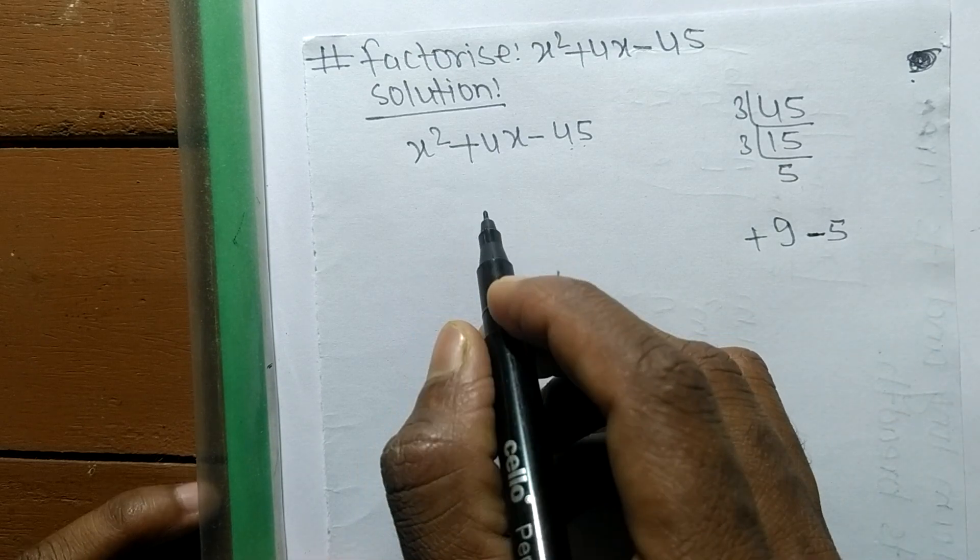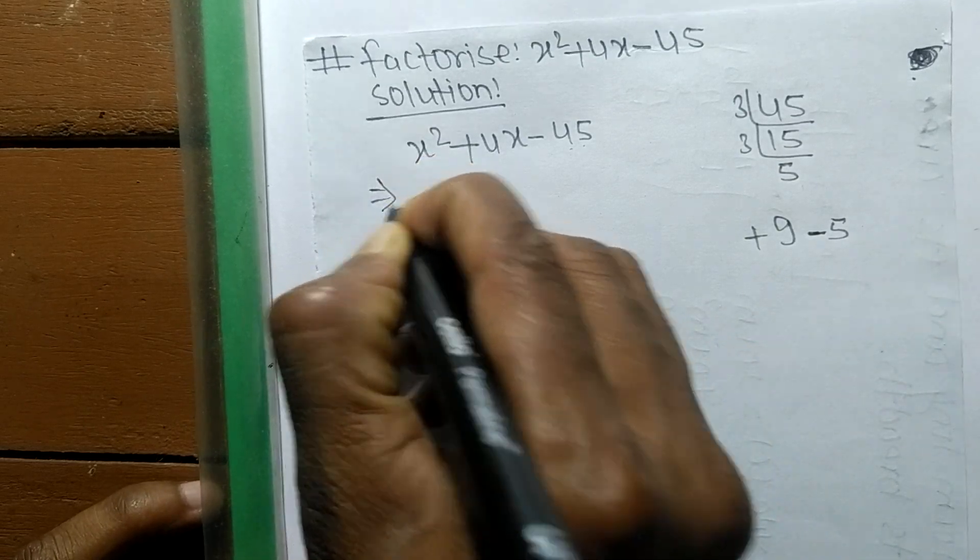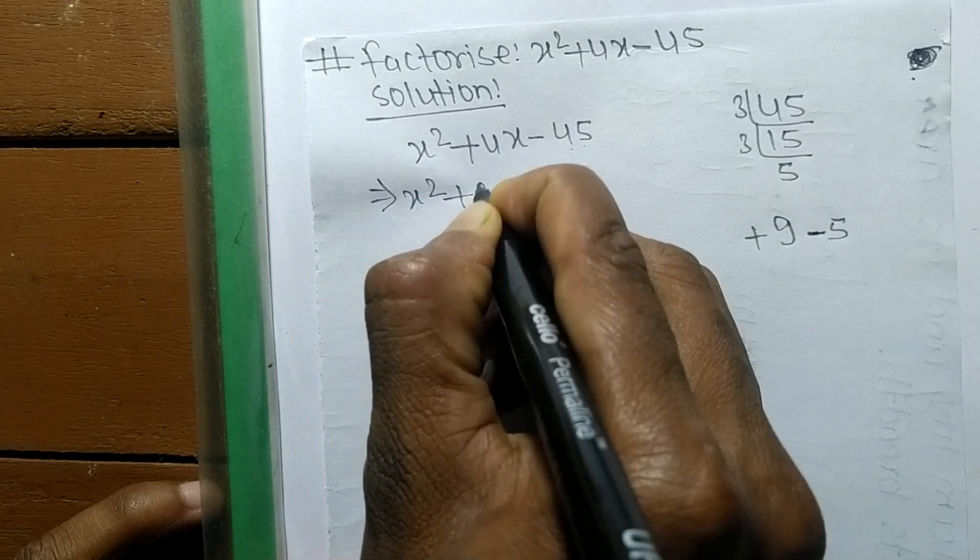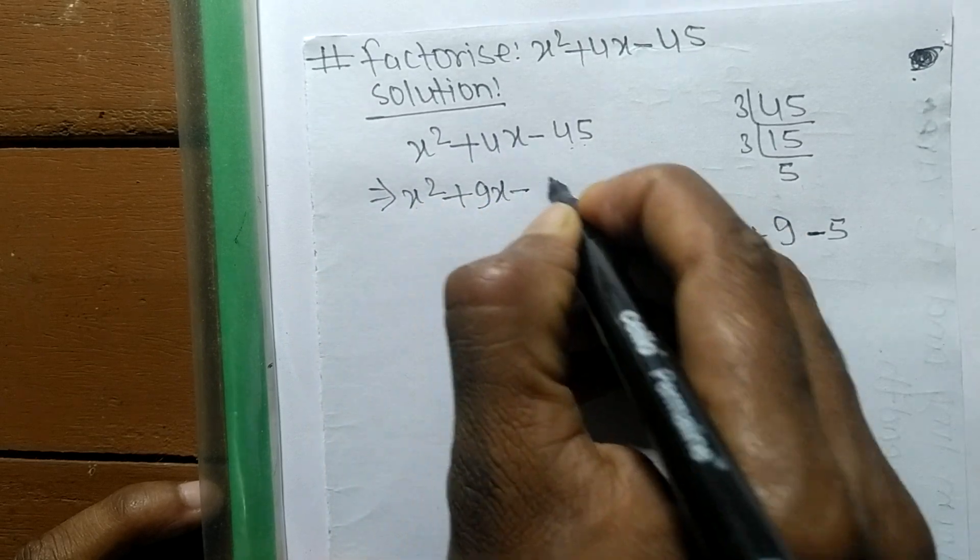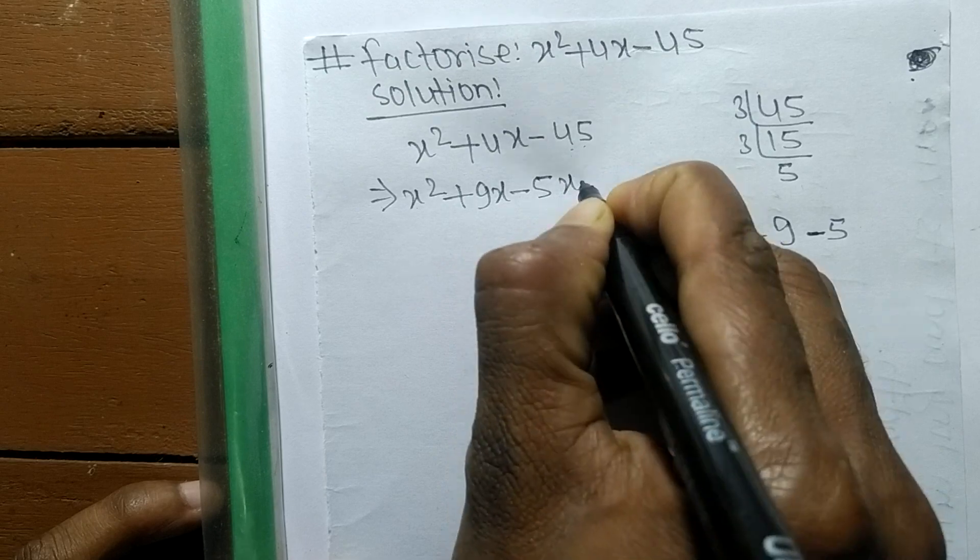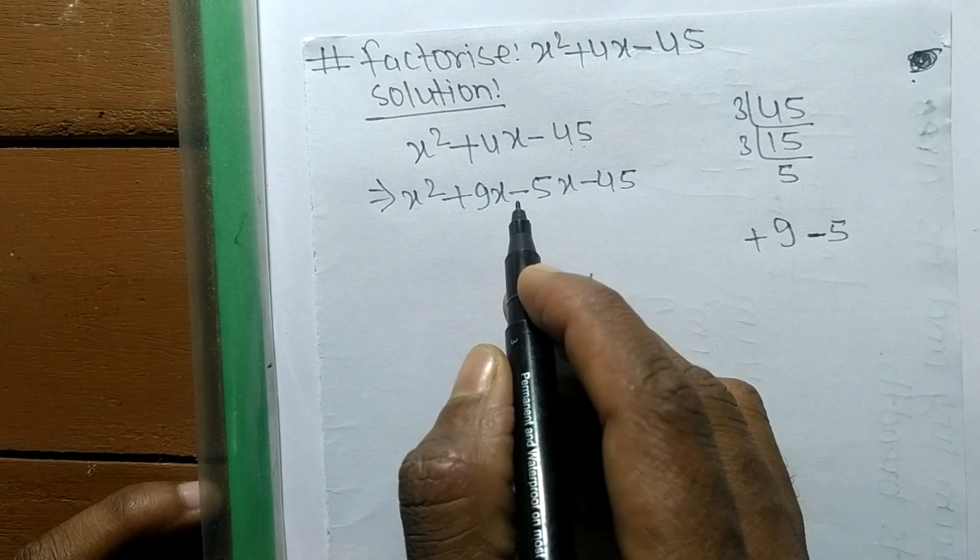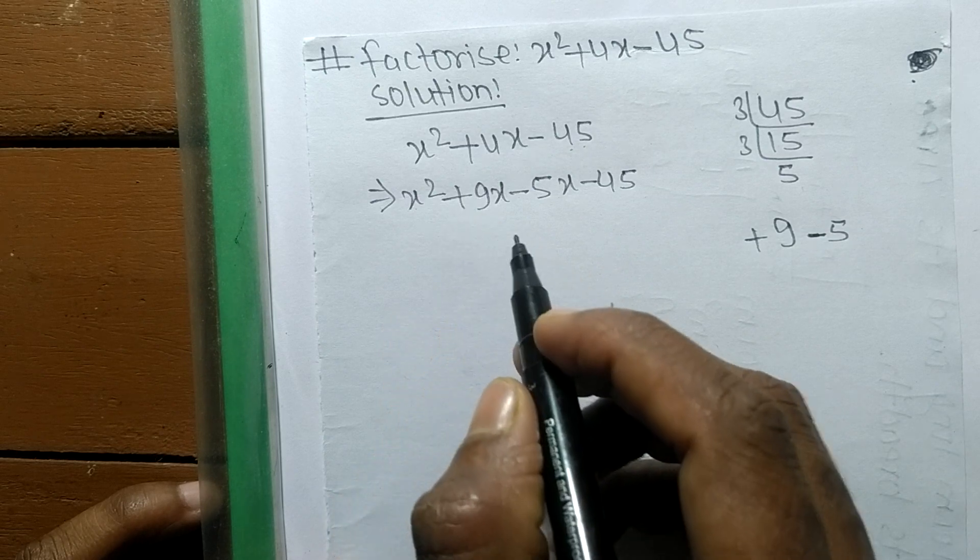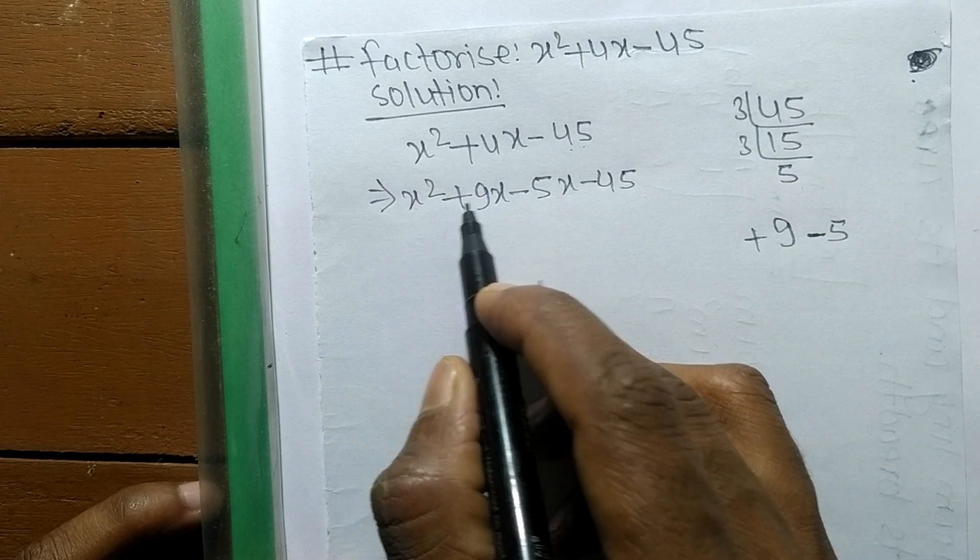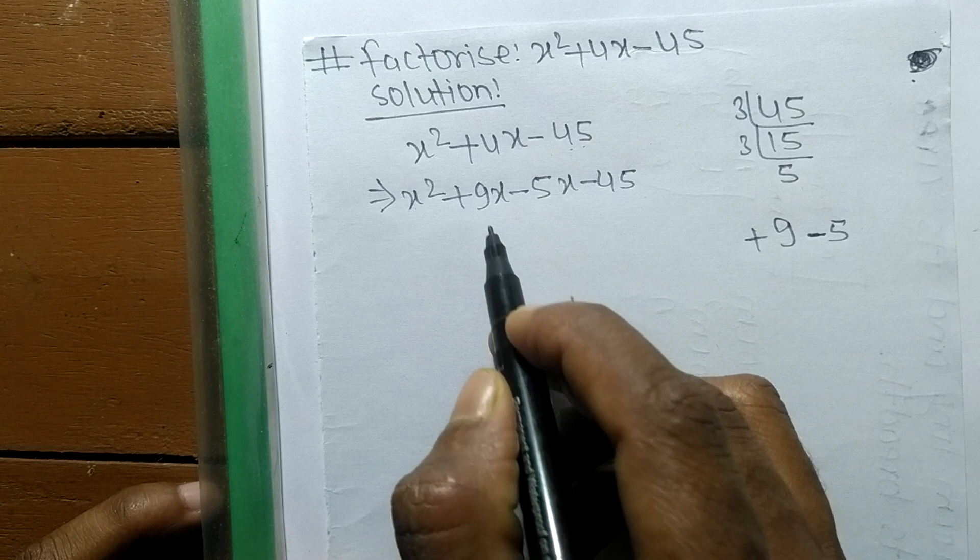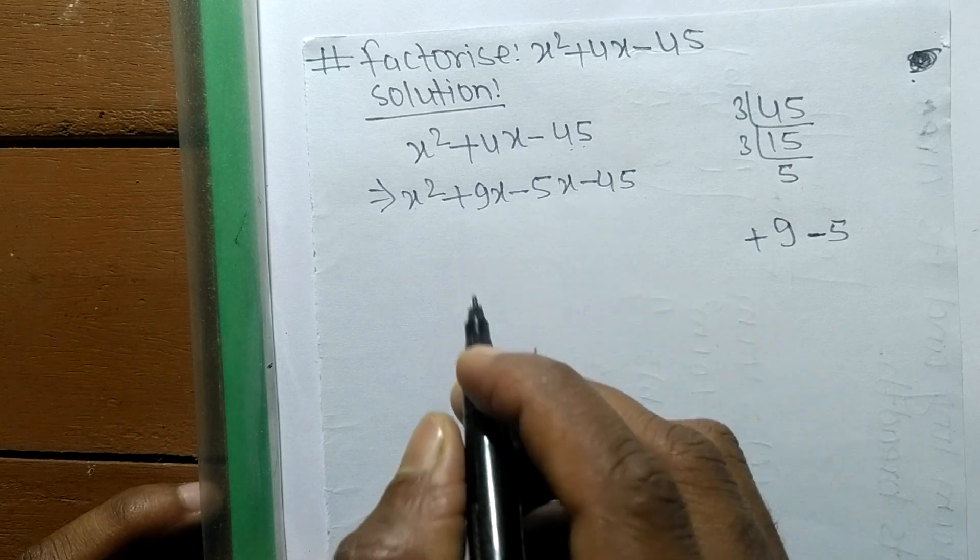So we can write it x² + 9x - 5x - 45. Plus 9 minus 5 means plus 4. Plus times minus means minus, and 9 times 5 means 45.